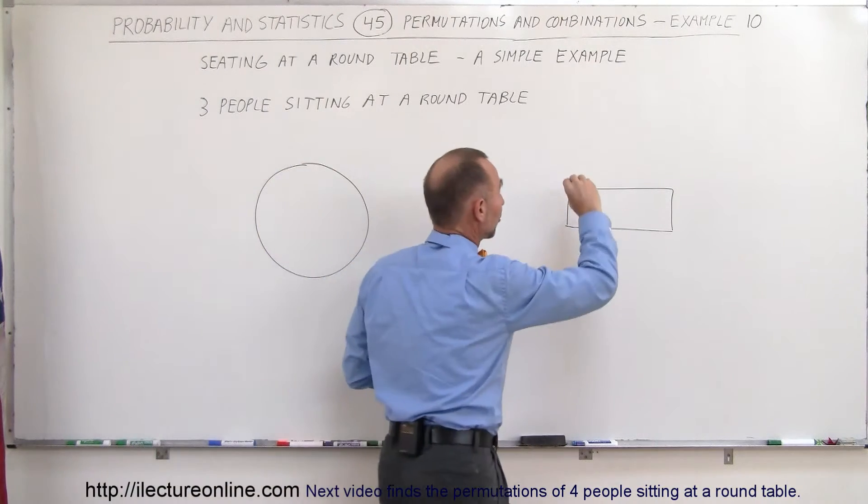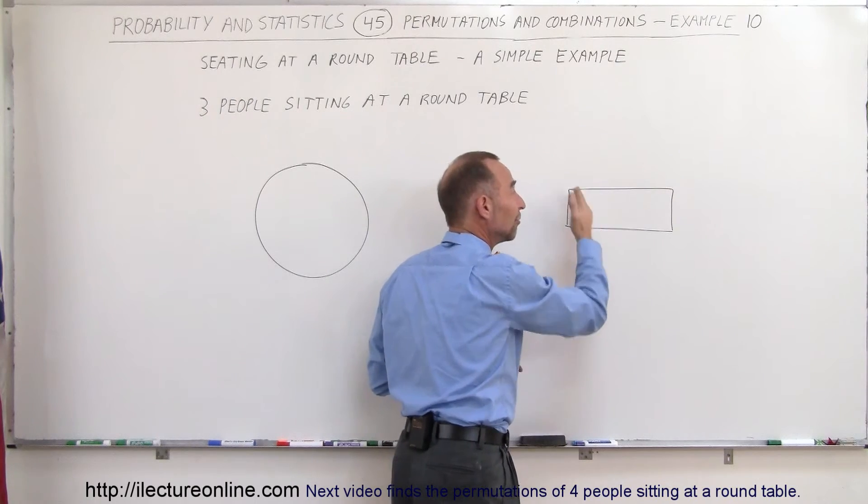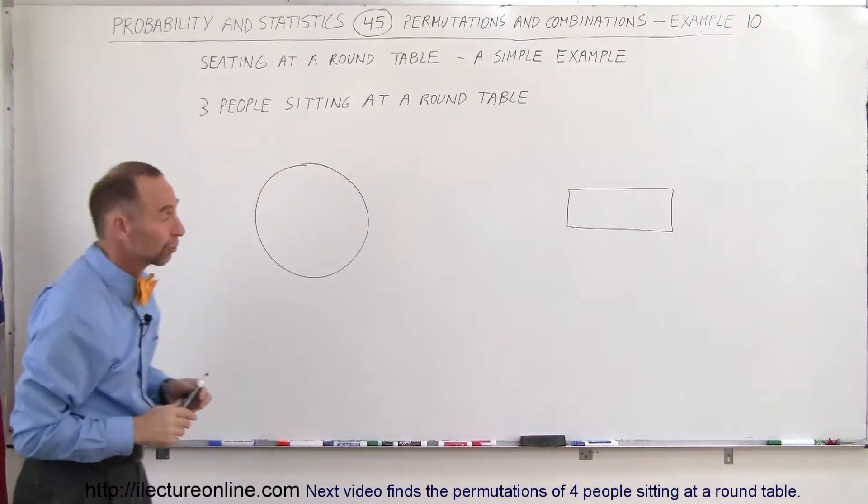Here, for example, if the first person sits at this corner, that's a specific location on the table that looks different from any other location on that table, and so it does matter where the first person sits.